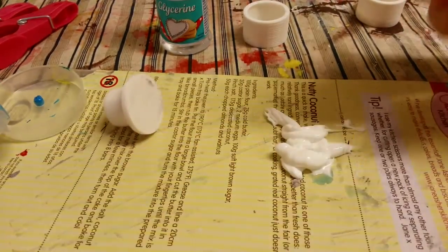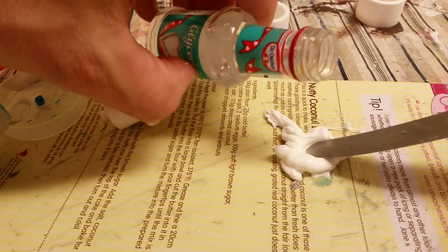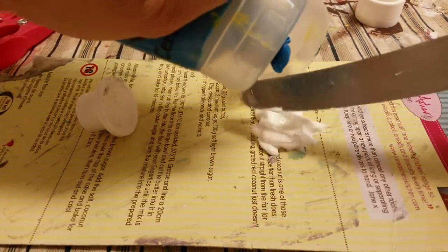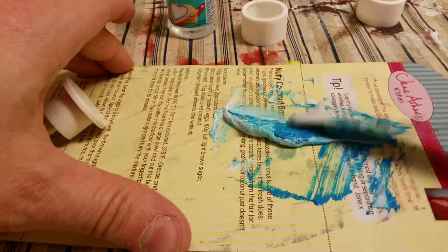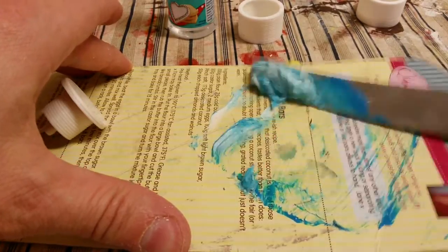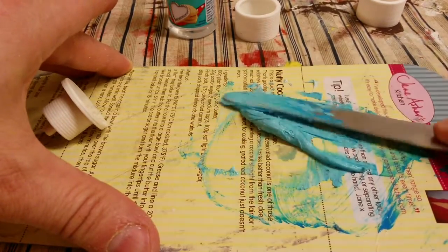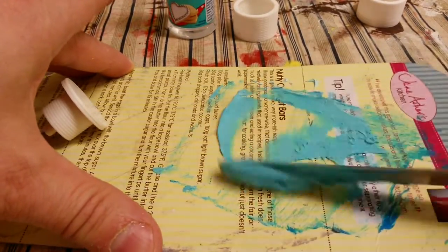What you need to do is get the glycerin and put in two drops - one, two - and then put a blob of the blue or whatever color you're using, and then mix it round. What happens is that the glycerin mixes with the silicone and starts it to set, and then the paint helps you to see when you've fully mixed it. So we're just going to mix it as much as we can, make sure it's all fully mixed in.